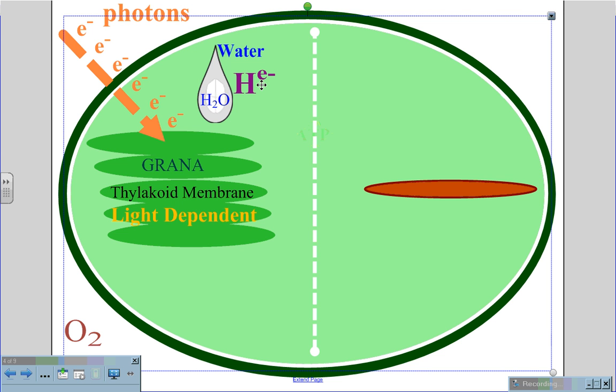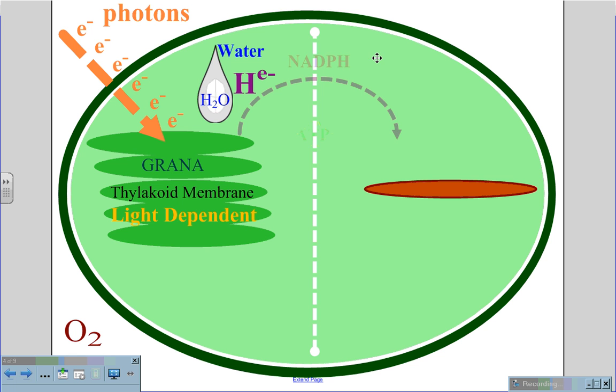This excited electron will jump on a molecule called NADP to form what is called NADPH, and this NADPH will then travel over to the stroma for the light-independent reaction. It is called the light-independent reaction because no light is required.